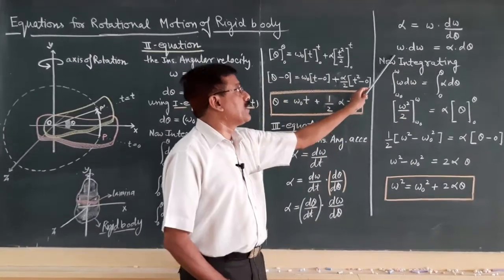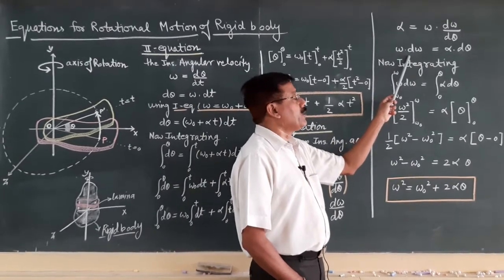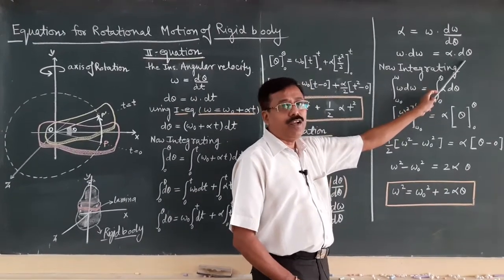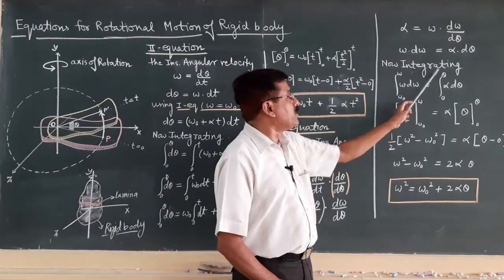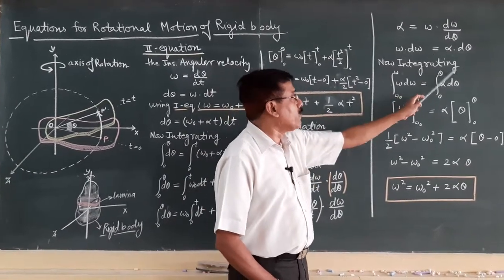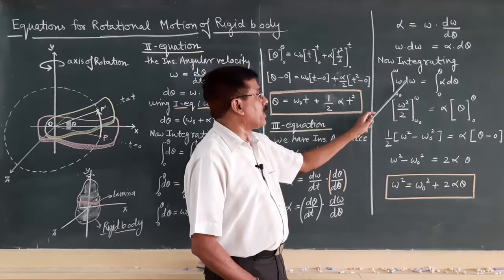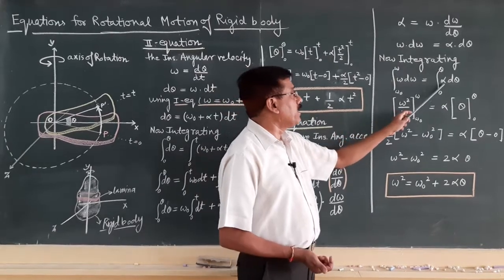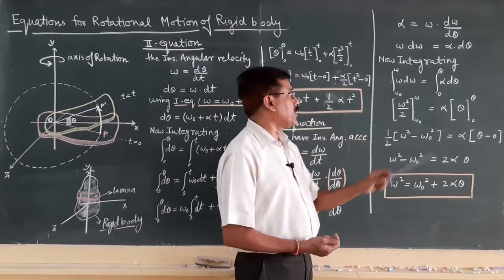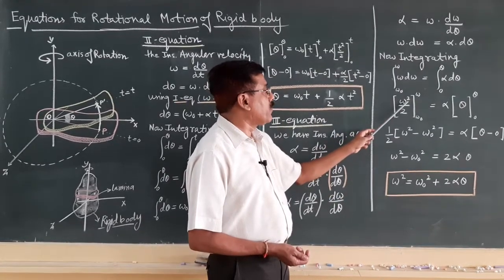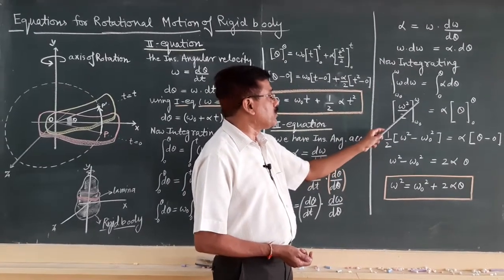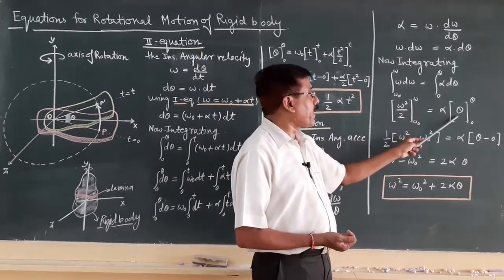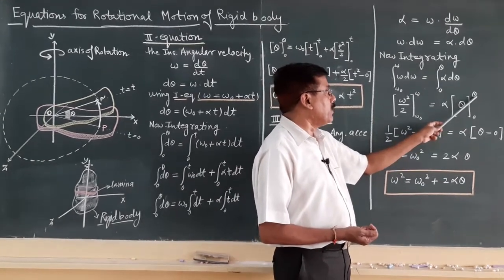On the left side the variable term is angular velocity; on the right side it is angular displacement. We integrate within the limits: on the left, omega d-omega from omega-zero to omega; on the right, alpha d-theta from 0 to theta. Integrating omega d-omega gives omega-squared over 2 from omega-zero to omega. Since alpha is constant, integrating d-theta gives theta from 0 to theta.